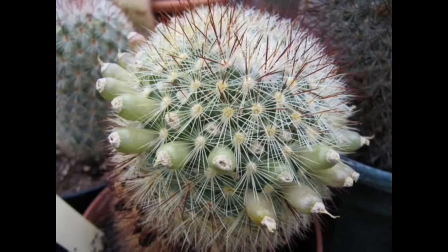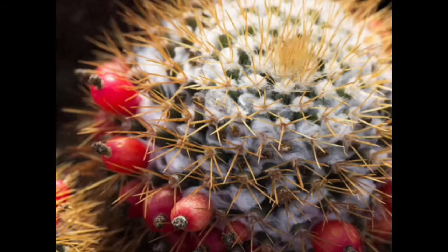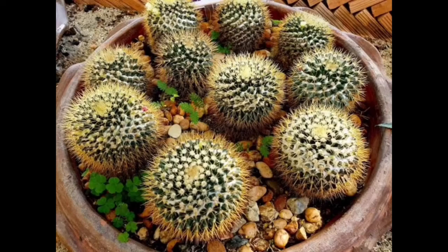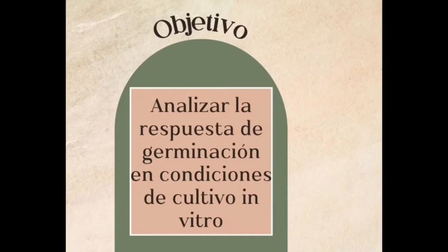La Mammillaria nivosa es un cactus solitario que puede llegar a medir 40 centímetros de diámetro, tallo globoso o cilíndrico corto, flores diurnas de color amarillo y semillas de color marrón. En el año 2013 fue evaluada por la lista roja de la UICN, Unión Internacional para la Conservación de la Naturaleza, siendo catalogada como Preocupación Menor.